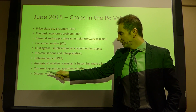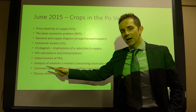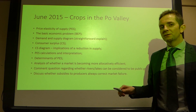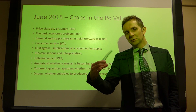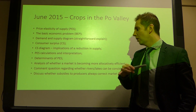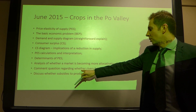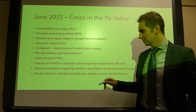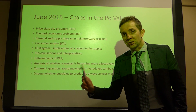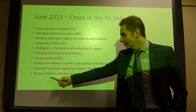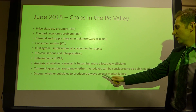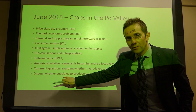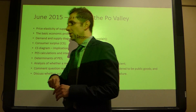The determinants of price elasticity of supply were also assessed. Moving into the heavier questions, there was an analysis of whether a market is becoming more allocatively efficient — where price equals marginal cost — and a comment question on whether rivers and lakes can be considered truly public goods. Finally, the discussion essay question was: discuss whether subsidies to producers always correct market failure. So the key area on that paper was subsidies.